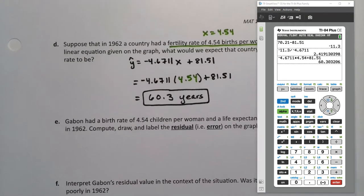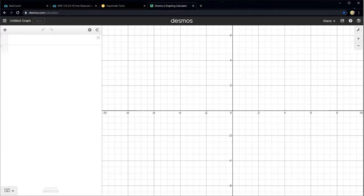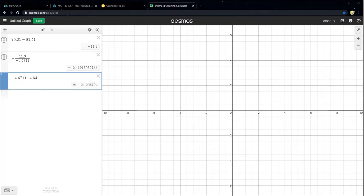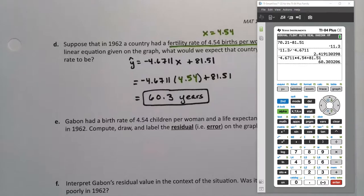Now for both the last questions, if you don't have a calculator and you want to be able to find them, you can use Desmos. So for example, I can take 70.21, subtract 81.51, previous example. And just divide negative 11.3 divided by negative 4.6711, and there you have it. And then the one we just did, negative 4.6711 times 4.54 plus 81.51. So you can always use Desmos if you're relying on StatCrunch and you don't have a calculator, you can use Desmos as your calculator for doing simple things like adding and subtracting. You can see it comes up with the same answer, 60.3, right there. Alright, so we get 60.3 years.